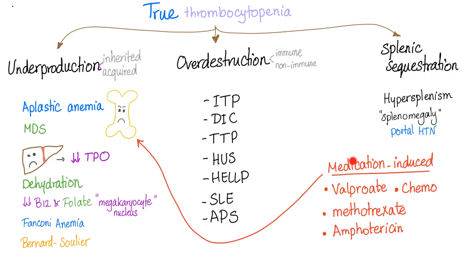There is another cause: medication-induced. How does medicine induce thrombocytopenia? By damaging the bone marrow — called myelosuppression — such as valproic acid, chemotherapy, methotrexate, and amphotericin B. If you ask a pharmacologist, he'll give you a very long list.